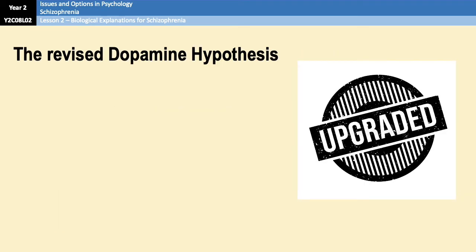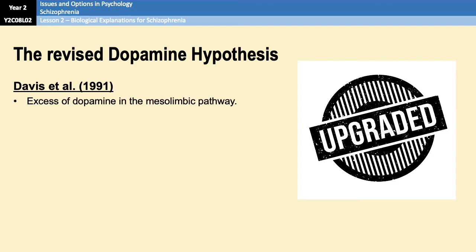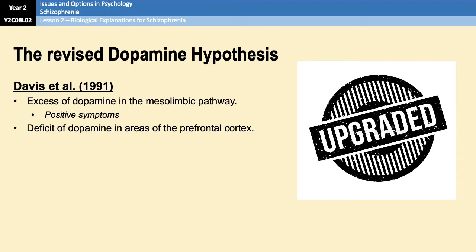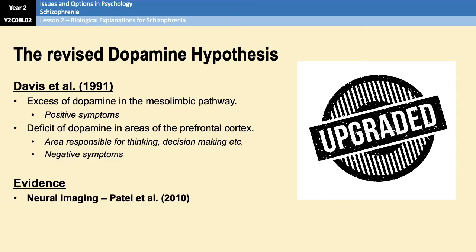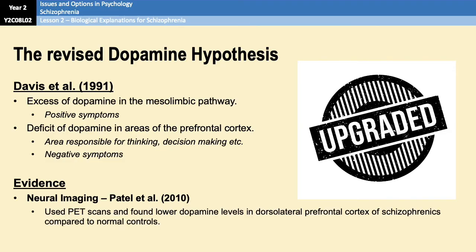The dopamine hypothesis got an upgrade in 1991 when Davis et al. suggested that it's not just about excess levels of dopaminergic activity — it's actually about abnormal levels, whether too high or too low. For example, too much dopamine in the mesolimbic pathway, which is a reward pathway in the brain, can lead to positive symptoms of schizophrenia. However, a deficit of dopaminergic activity in areas of the prefrontal cortex — responsible for thinking and decision-making — can lead to negative symptoms such as cognitive impairment or avolition. Evidence for this comes from Patel et al. in 2010, where PET scans found lower levels of dopamine in the prefrontal cortex of schizophrenics compared to a control group.